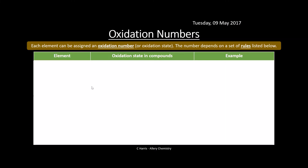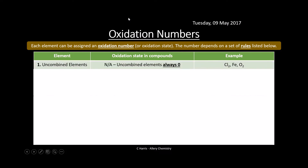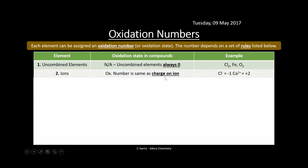Each element can be assigned an oxidation number, also called an oxidation state. This number depends on a set of rules you've got to know. Rule one: uncombined elements always have an oxidation state of zero — for example Cl₂, Fe, O₂. Rule two: the oxidation number of an ion is the same as its charge, so Cl⁻ is −1 and Ca²⁺ is +2. Rule three: Group 1 elements are always +1, for example potassium in KCl is +1.